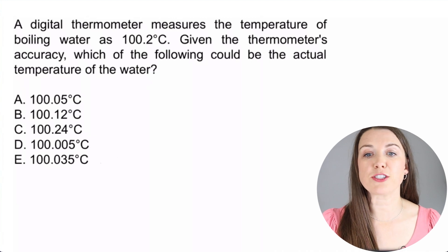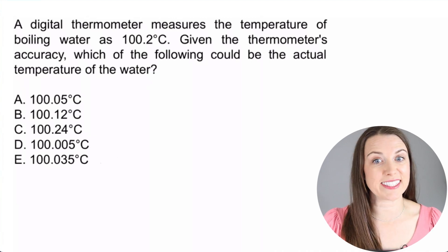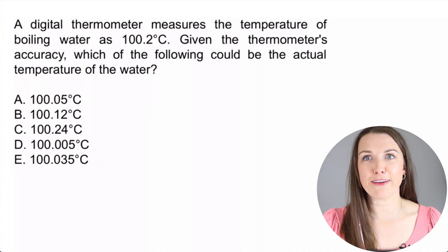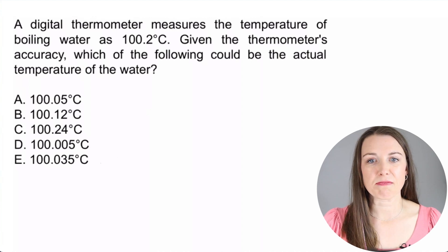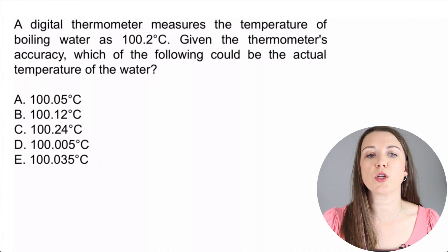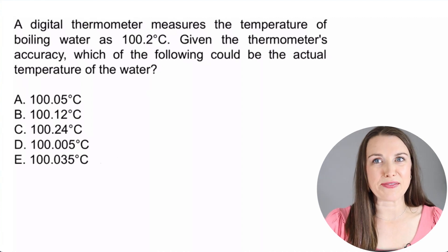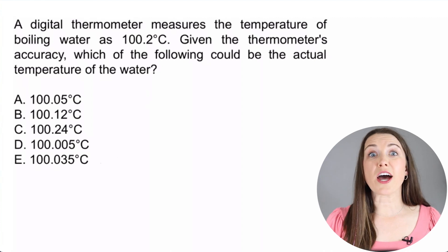A digital thermometer measures the temperature of boiling water at 100.2 degrees Celsius. Not Fahrenheit, friends, Celsius. Given the thermometer's accuracy, which of the following could be the actual temperature of the water? Now let's do a little science lesson, friends. So here we're talking about Celsius.